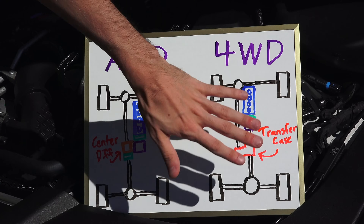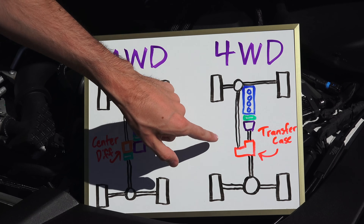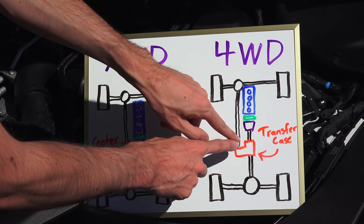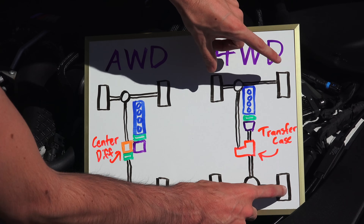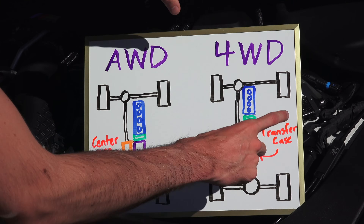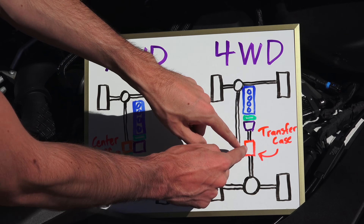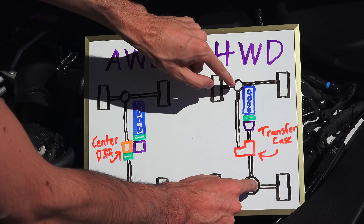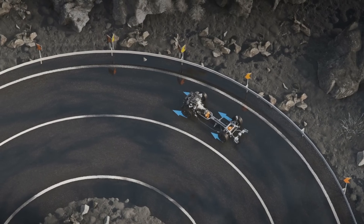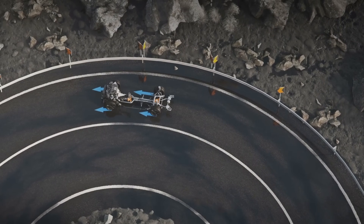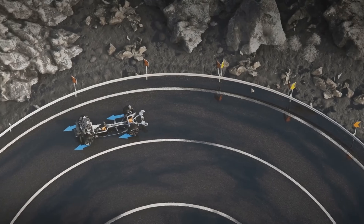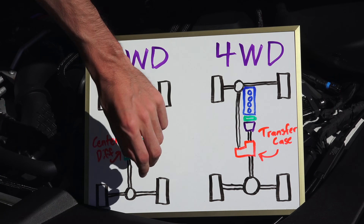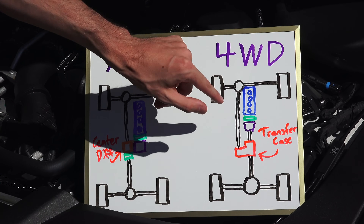Four-wheel drive, on the other hand, generally shouldn't be used on the road. The reason for this is because the transfer case often acts just like a locked differential. So if you have a speed differential between your rear axle and your front axle — for example, when you're going around a corner — you have binding within this transfer case because it's not able to send different speeds to each differential. They both get the exact same speed, and as a result these tires have to rotate at similar speeds going around that corner, causing binding, which you don't want.